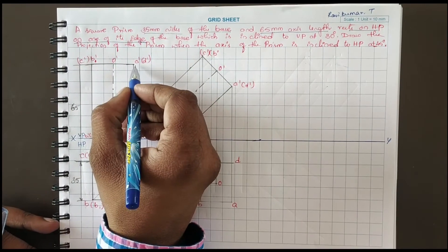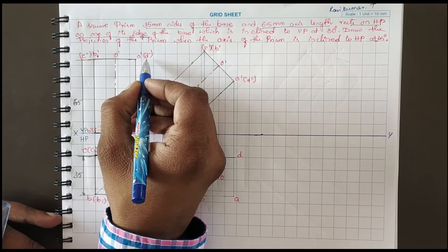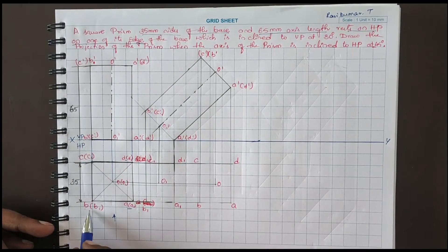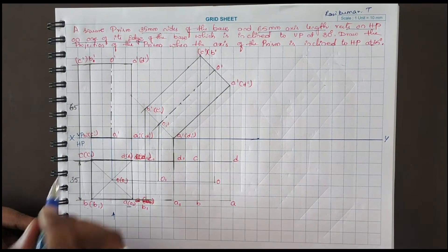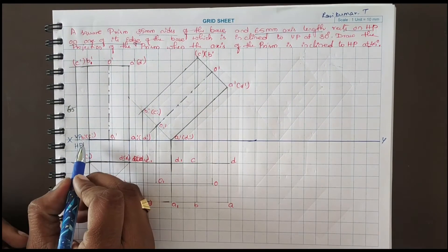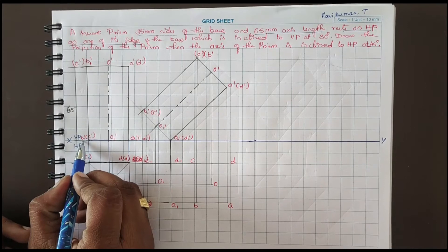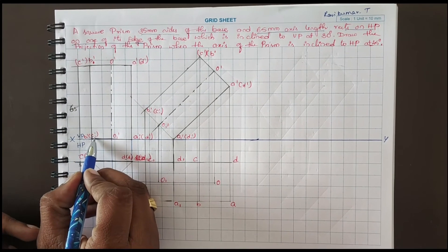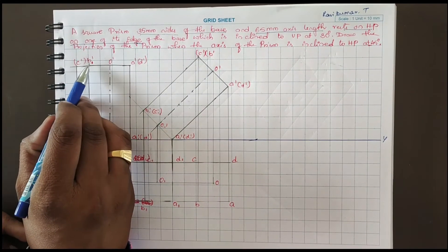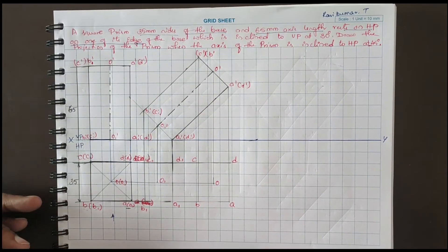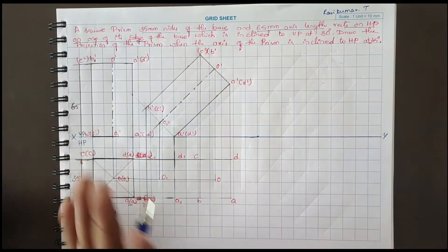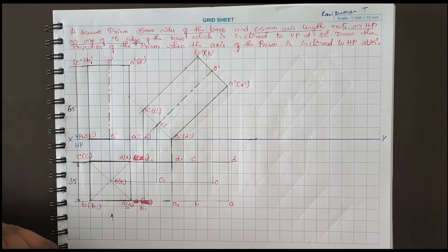Next, A dash into D dash in the bracket — not visible. Similarly, B1 is visible, C1 is invisible, so that is why I have written B1 dash in the bracket, C1 dash, C dash in the bracket, B dash. This is the first position.